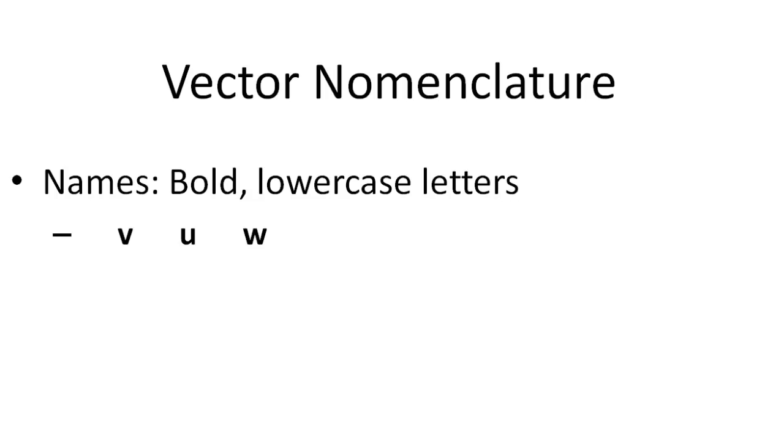So let's look at some standard ways we describe and name vectors. Generally, vectors are named with bold lowercase letters such as v, u, and w. Each of these would indicate a vector: vector v, vector u, vector w. Bold and lowercase.